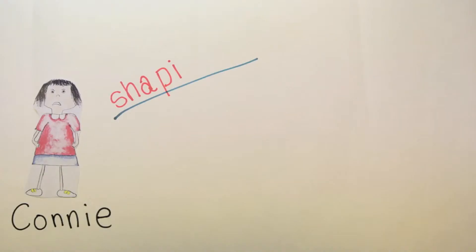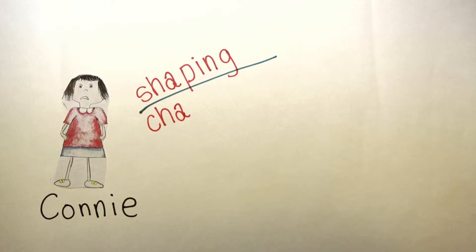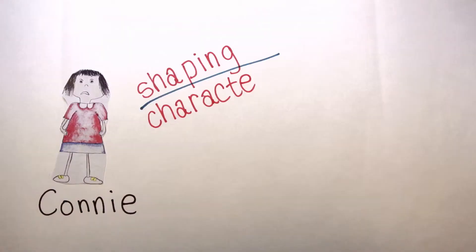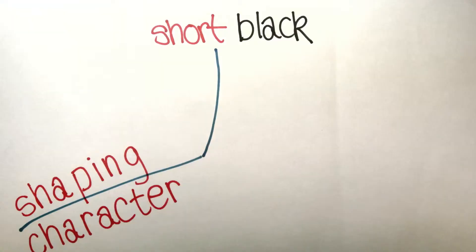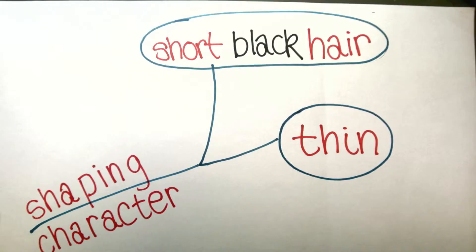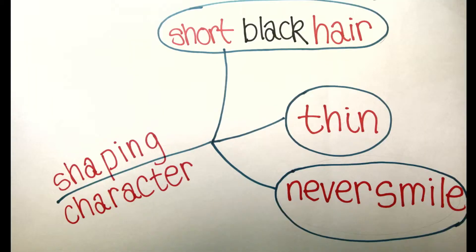Our first branch is called shaping the character. Draw a straight line and write those words along it. We'll then get started on our sub-branches. Connie has short black hair, she's thin, she never smiles, and she has a pouting mouth.